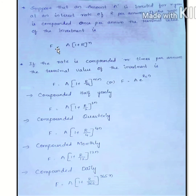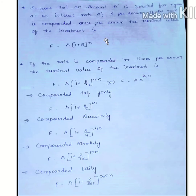This calculated value is called the terminal value, and the amount you put in is your invested value. The formula used is the standard time value of money compounding formula for future value calculation.